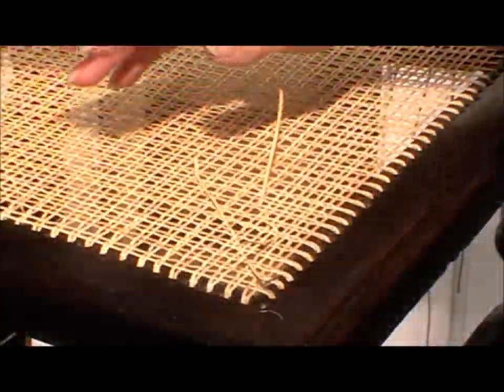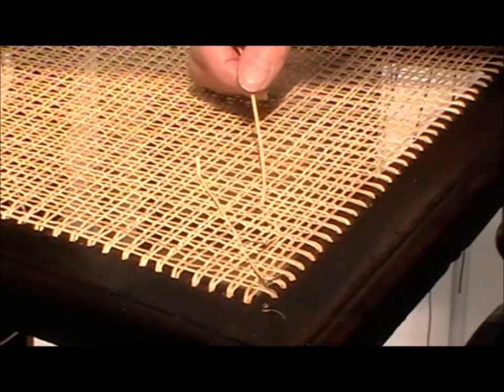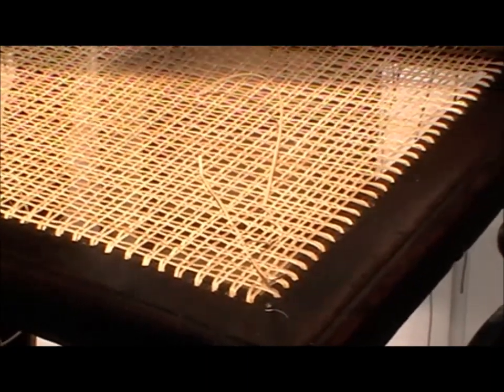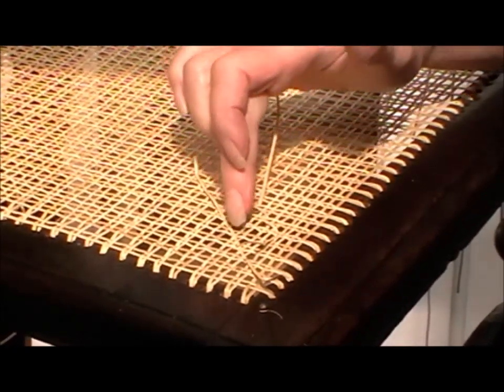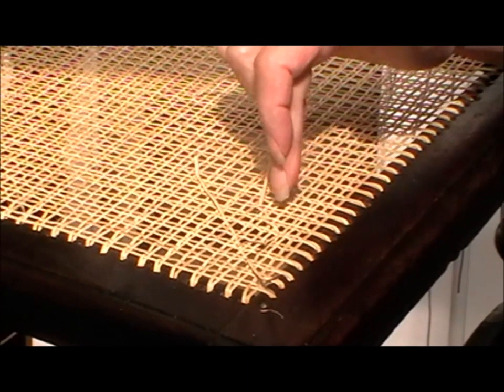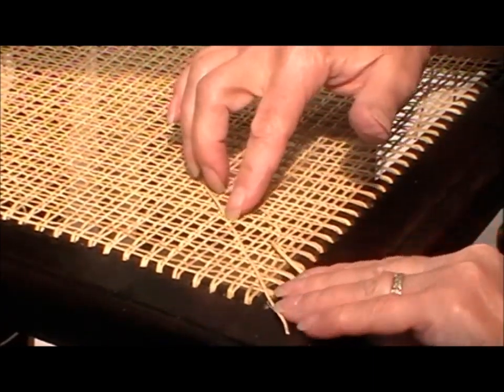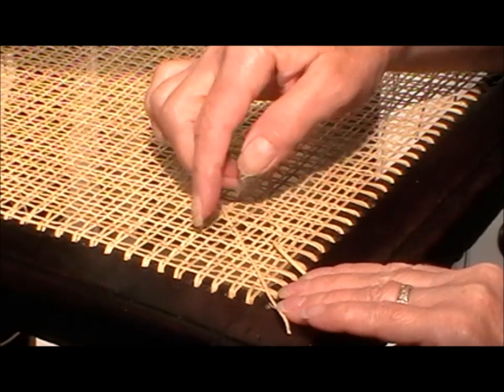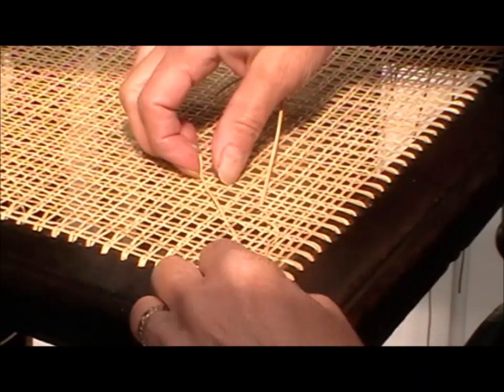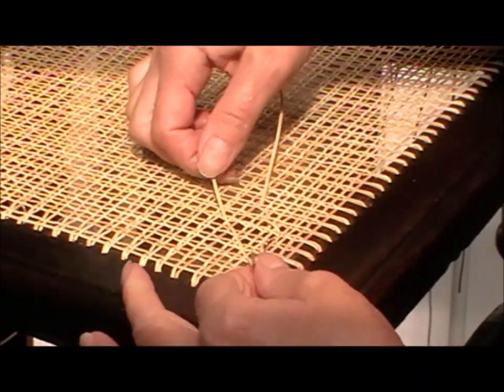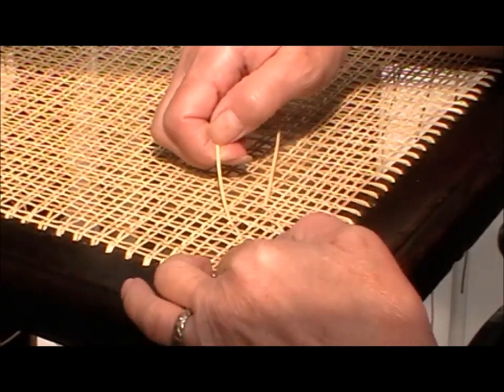Now when you weave in the diagonals, a lot of people when they do it for the first time get the weave the wrong way around. There is a right and a wrong way. This is the right way here, and this is the wrong way here. And I'll tell you why. This one's going under the horizontal strands and over the vertical strands. And you know you've got it the right way around when you can do... if I can get hold of it, if you can do that.